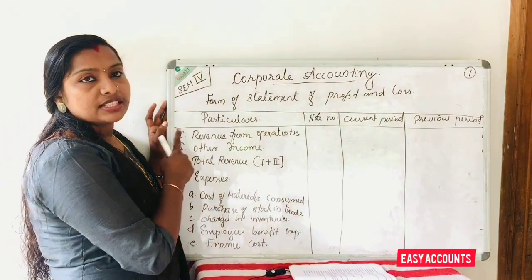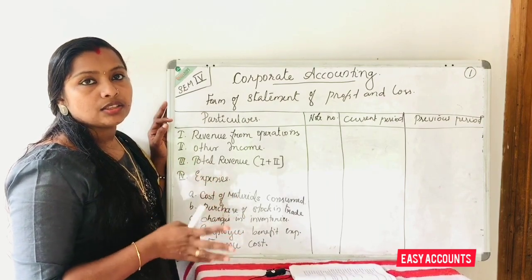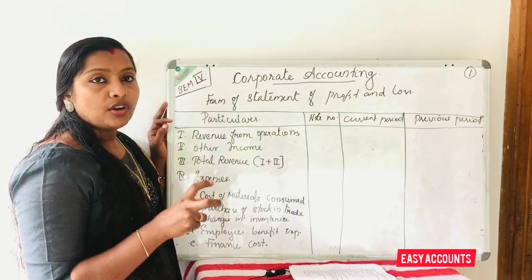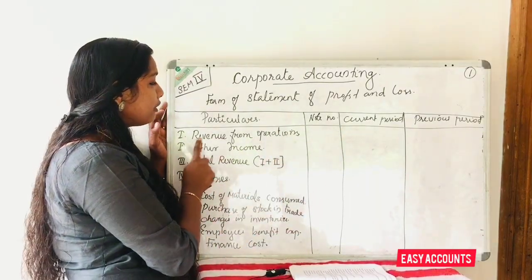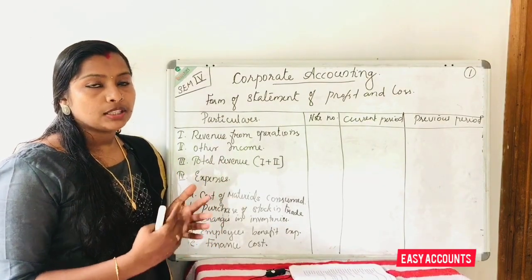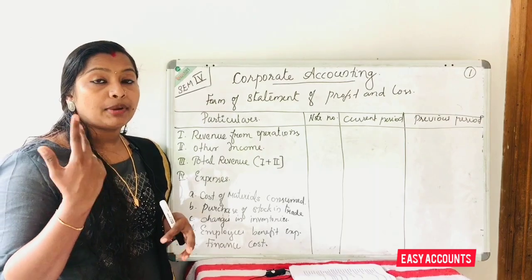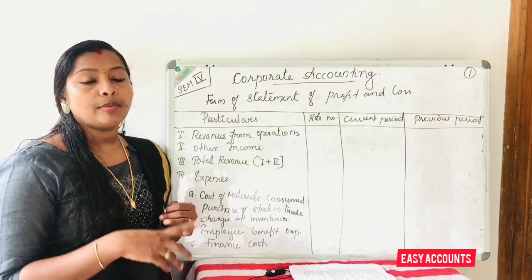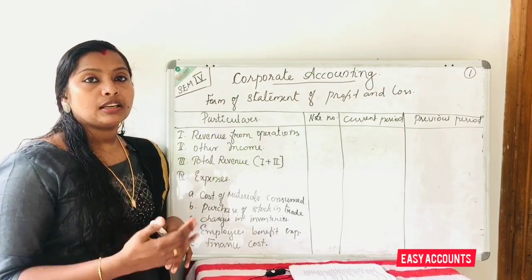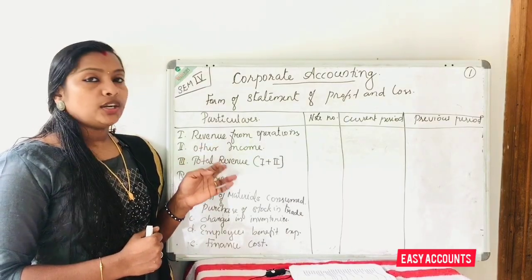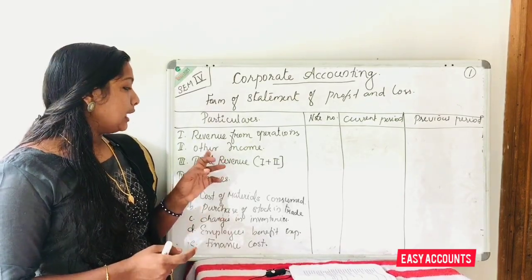The first item is revenue from operations. When we start, we record the income from business activities — for example, sales of products. Revenue from operations is the income from core business activity. We have two headings: if you have a business, you can get sales, or you can receive a commission. The first heading is revenue from operations.